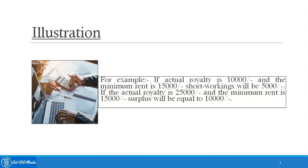...if minimum rent is more than royalty, short workings will generate. If minimum rent is less than royalty, then surplus will generate. So short workings and surplus are opposite to each other. Thank you.